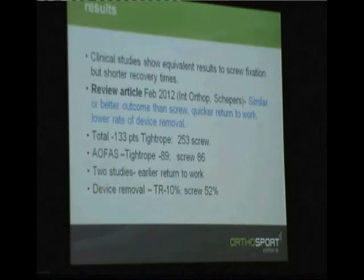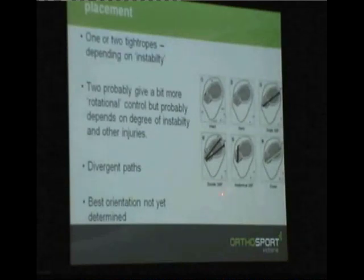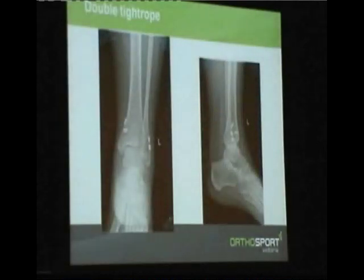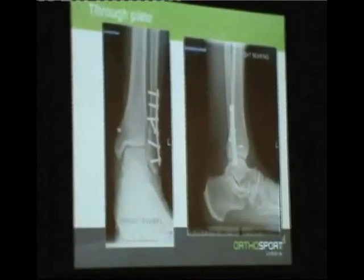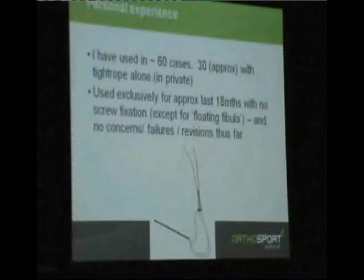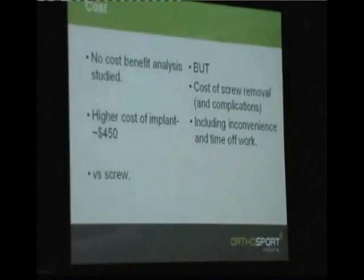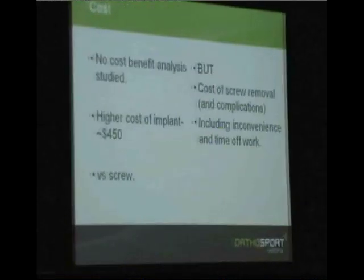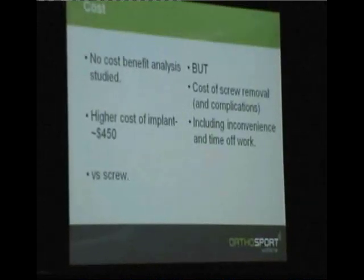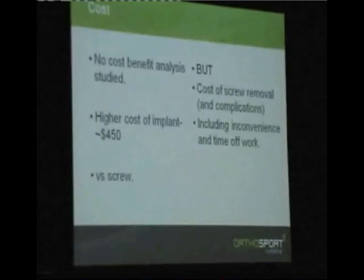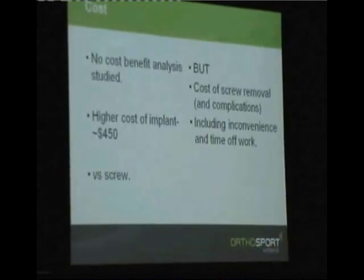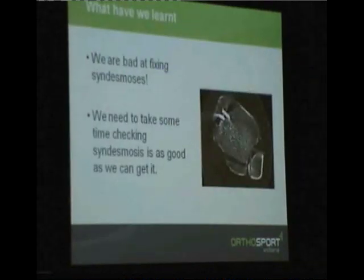A couple of studies show earlier return to work with the tightrope, and overall device removal is around 10% due to irritation, compared to higher rates with screws. One or two slightly divergent tightropes may give stronger fixation and a bit more rotational control. Using them through a plate is an option. Cost-benefit analysis hasn't been formally done yet, but factoring in the cost of returning to theatre for screw removal, time off work, recovery, and complication rates, the higher implant cost likely makes up for itself multiple times in follow-up.